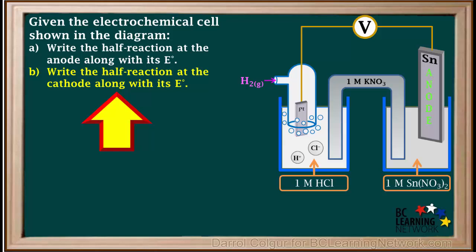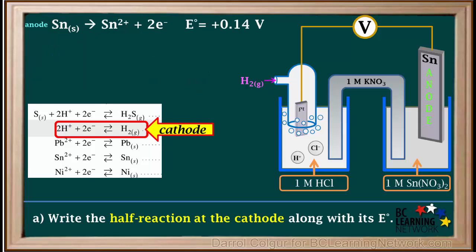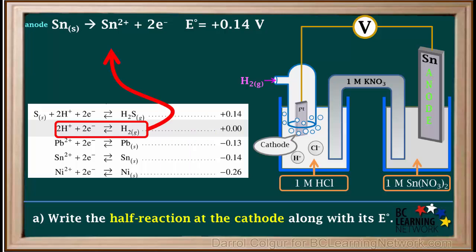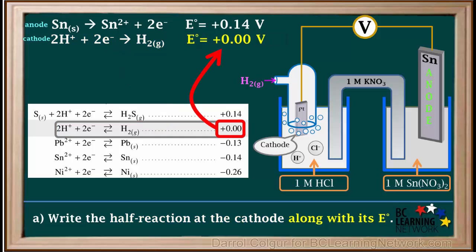The B part of the question asks us to write the half reaction at the cathode along with its E° value. The cathode half reaction is the hydrogen half cell. And the cathode half reaction is not reversed, so it's 2H⁺ plus two electrons gives H2 gas. And its E° value is equal to 0 volts.